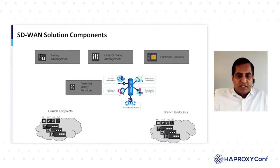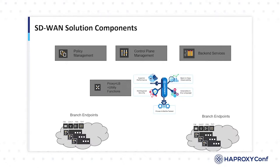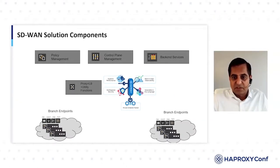Looking at these SD-WAN solution components — management components, policy manager, backend services, branch endpoints — there is a need for an intermediate entity, or utility host, which can provide all these services. That's where HAProxy comes into the picture. HAProxy forms a core component of the utility host, providing connectivity proxy services to all the web filtering, upgrade services, test services, load balancing, high availability, and lifecycle management of branch endpoints including software upgrades. HAProxy plays a critical role in providing these services and capabilities.